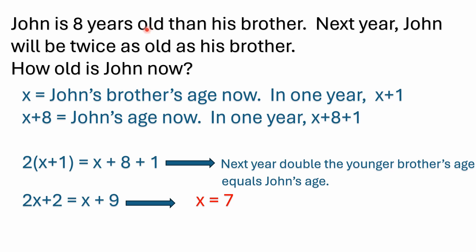And then from the problem, we know that John is eight years older than his brother, and that's as of today. So we know that John's age today would be x plus eight. And in one year, John would be x plus eight plus one, which is really nothing more than x plus nine.